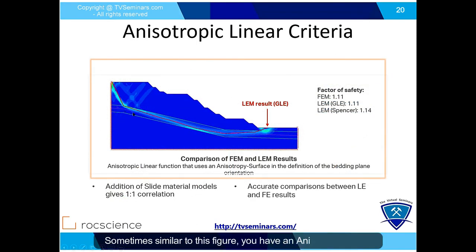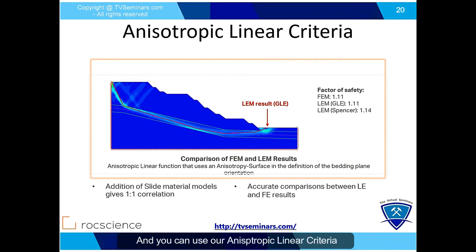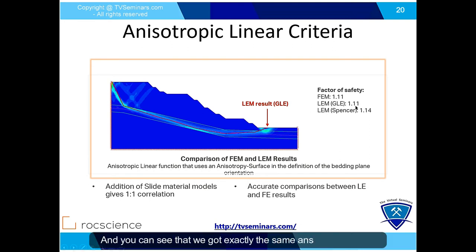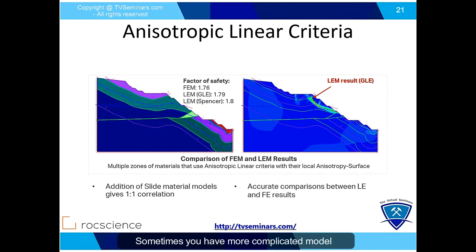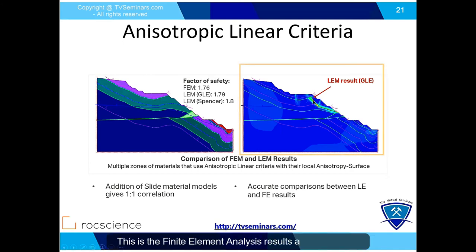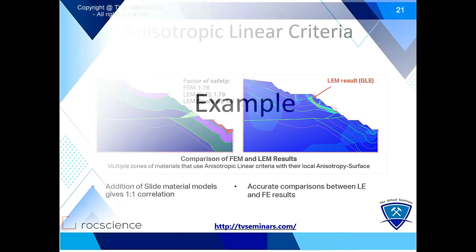Similarly, you have an anisotropic model where you can define it with a surface and use the Anisotropic Linear criteria. The red line is the critical slip surface corresponding to the limit equilibrium method, and you can see that we got exactly the same answer — a factor of safety of about 1.69 — with six anisotropic surfaces. You can look at the results, including the finite element results alongside the limit equilibrium results with a factor of safety of about 1.69.